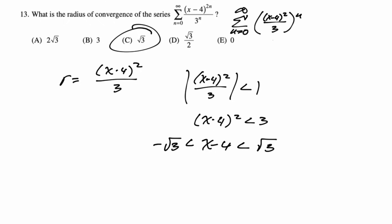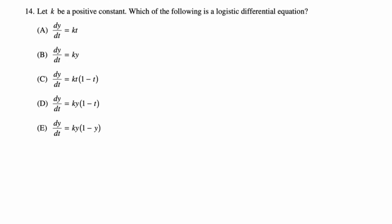Which of the following is a logistic differential equation, where k is a positive constant? Option A has only t's — not logistic, since logistic is an implicit DE with y's. Option B is just exponential: separate and integrate, you get ce^(kt). Option C almost looks logistic but has variable issues — they should all be y's. Option D mixes y's and t's, which is separable. So the answer is E.